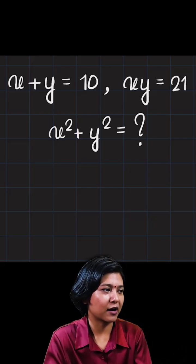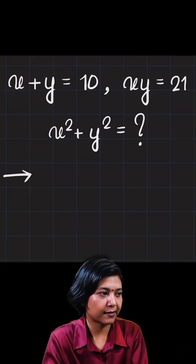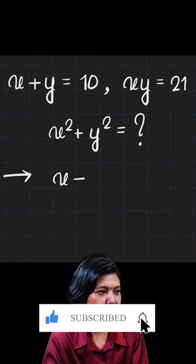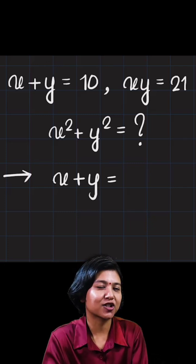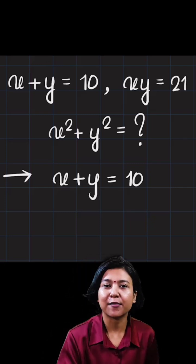We know the sum of x plus y is 10. So when you have the sum of two terms and you want to find the sum of their squares, the first thing that should come to your mind is to square both sides.